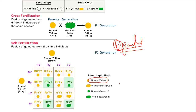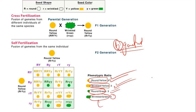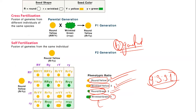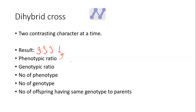Round yellow is 9, wrinkled yellow is 3, round green is 3, and wrinkled green is 1. You can see the ratio is 9:3:3:1, which is the phenotypic ratio for dihybrid cross in the F2 generation. This is the phenotypic ratio.